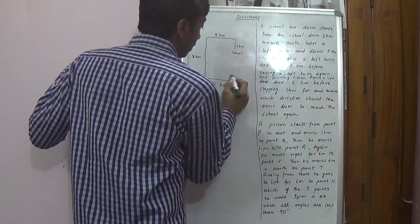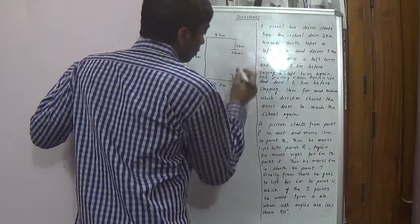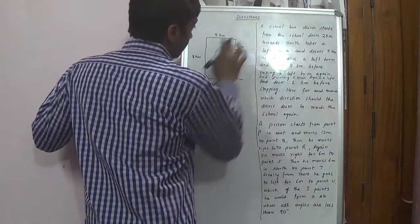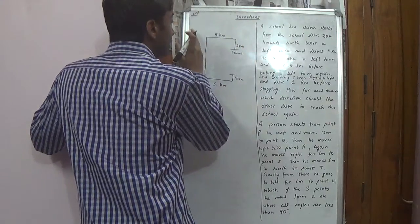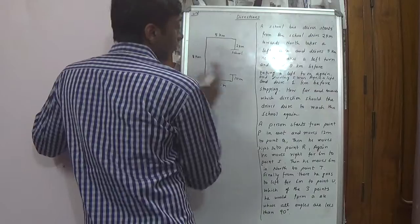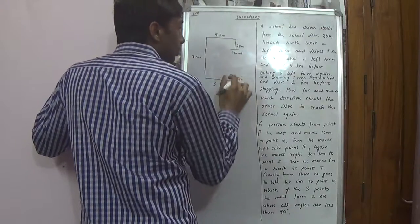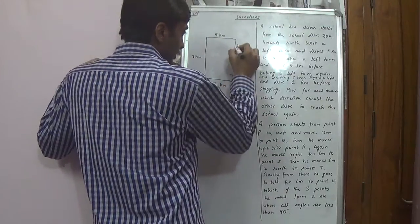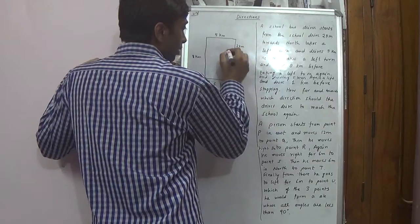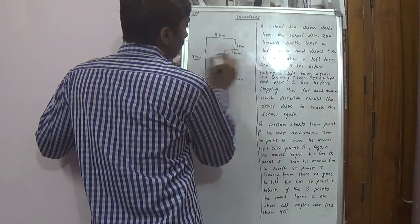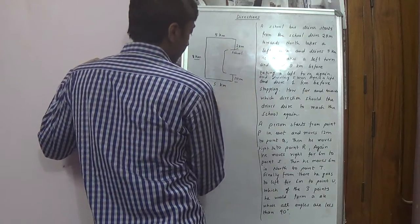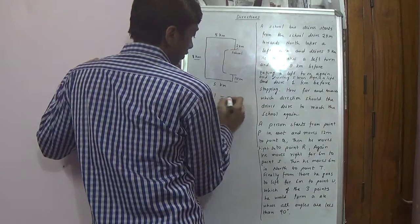Because he has gone five kilometers to the west and five kilometers to the east, he has come to the same point. These two points are in the same line. And this distance is eight kilometers minus two kilometers minus one kilometer, which is five kilometers.